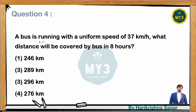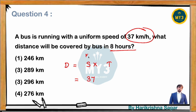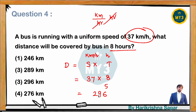If a bus is running at a uniform speed of 37 km/hr, what distance will it cover in 8 hours? Distance = speed × time = 37 × 8. Both units are consistent (km/hr and hours), so the result is in kilometers. 37 × 8: 8 × 7 = 56, 8 × 30 = 240 + 56 = 296 kilometers.